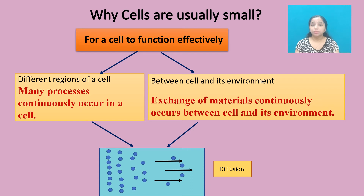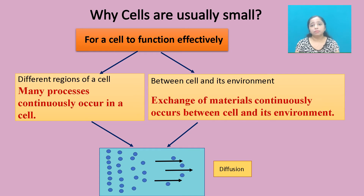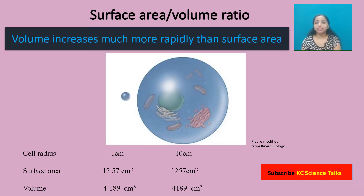The larger a cell is, the longer will be the time taken by substances to diffuse between different regions of the cell, and also from the periphery of the cell to the center of the cell. That is why, to make communication effective between different regions of the cell and also between the cell and its environment, cells are usually small.